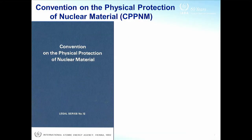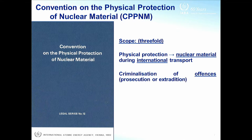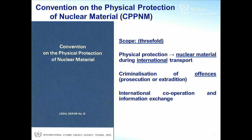The Convention on the Physical Protection of Nuclear Material (CPPNM), the first convention adopted in this area under IAEA auspices, currently has 155 states parties. Its scope is threefold: it deals with the physical protection of nuclear material, the criminalization of offences, and international cooperation and information exchange. The criminalization aspect is only one part of the CPPNM — perhaps not even the most important part. The most important aspect is the first one: physical protection.